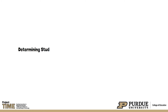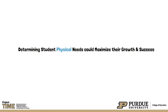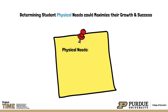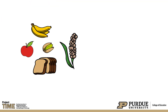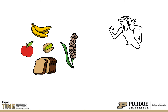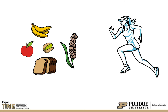It is important to determine students' physical needs within blended and online learning scenarios to ensure and maximize their growth and success. Physical needs are associated with physical health, mental health, and supervision. For example, balanced nutrition provides students the energy to perform their activities and it impacts their thinking skills, behaviors, and health.